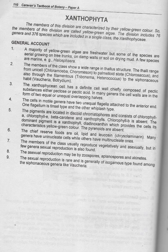Number nine: sexual reproduction is rare and is generally of the isogamous type, found among the siphonaceous genera like Vaucheria.